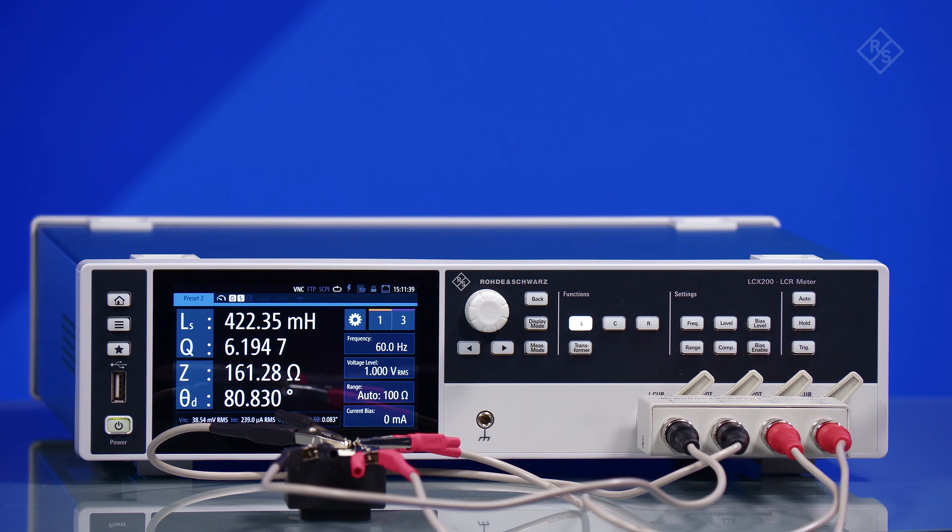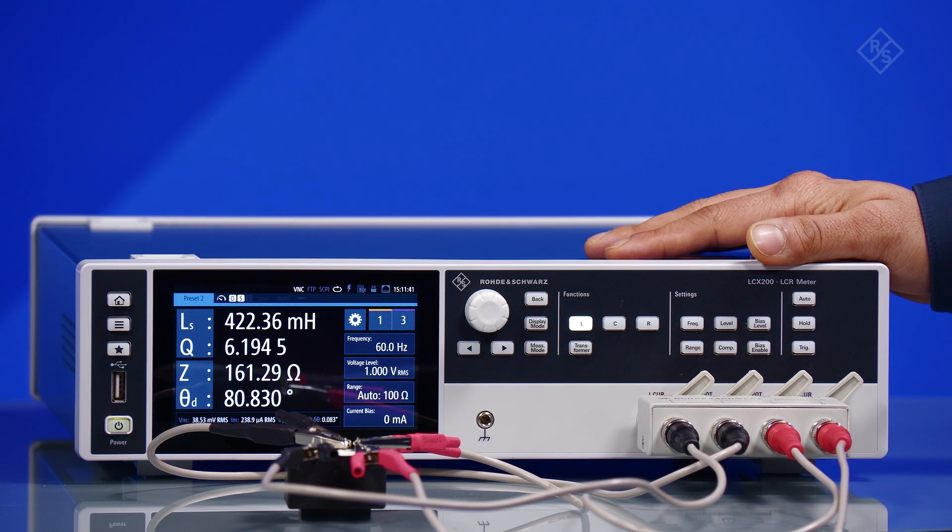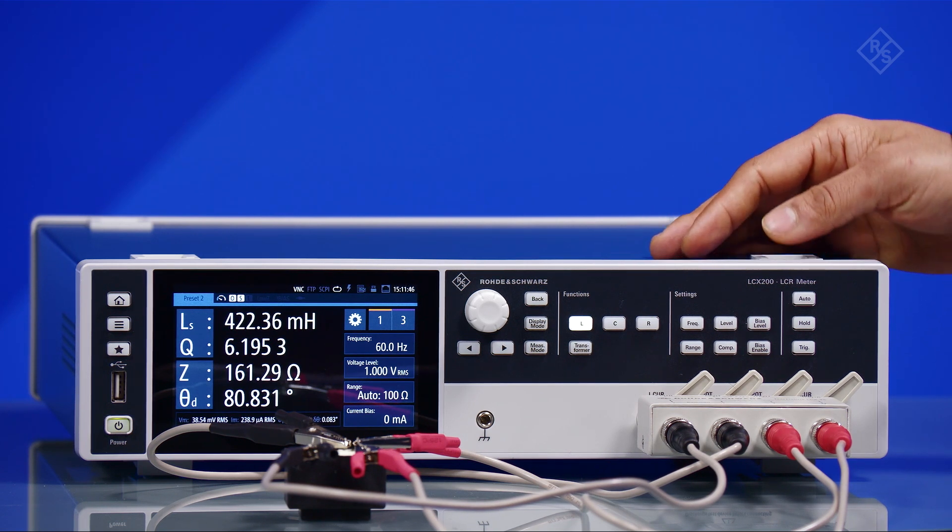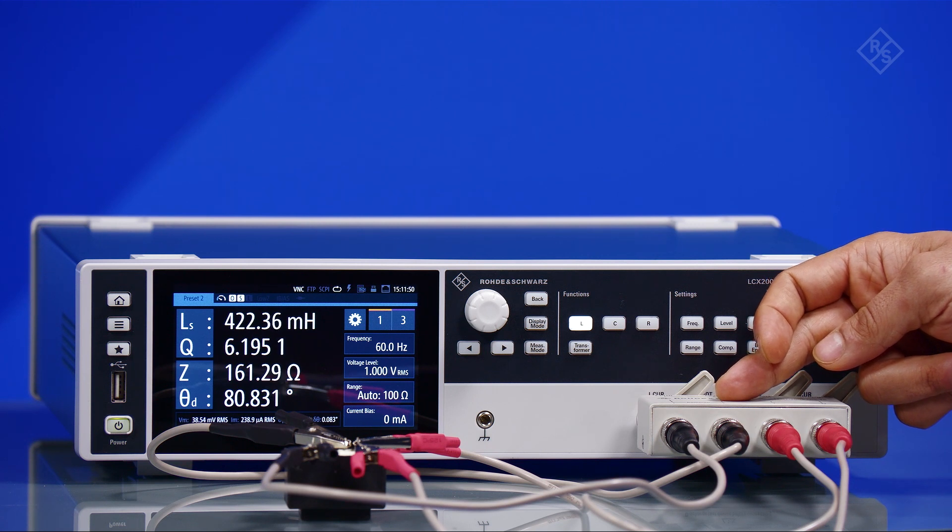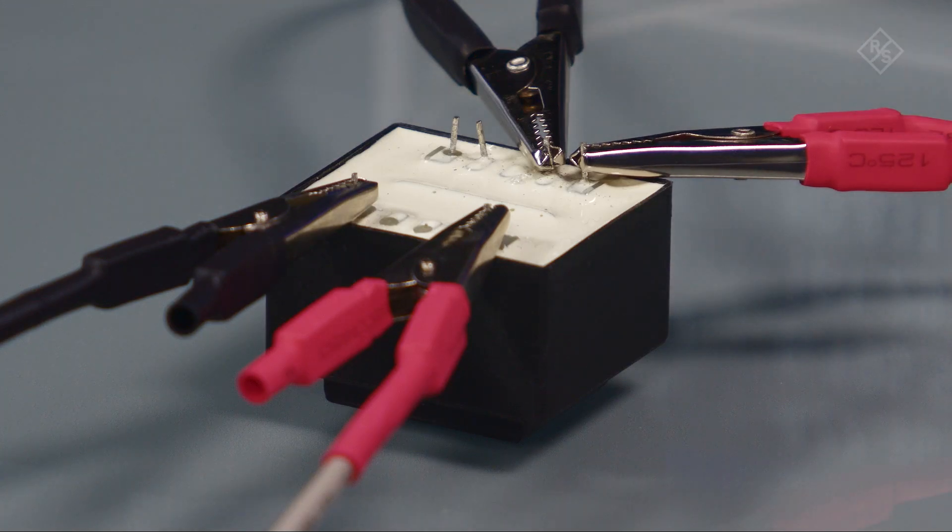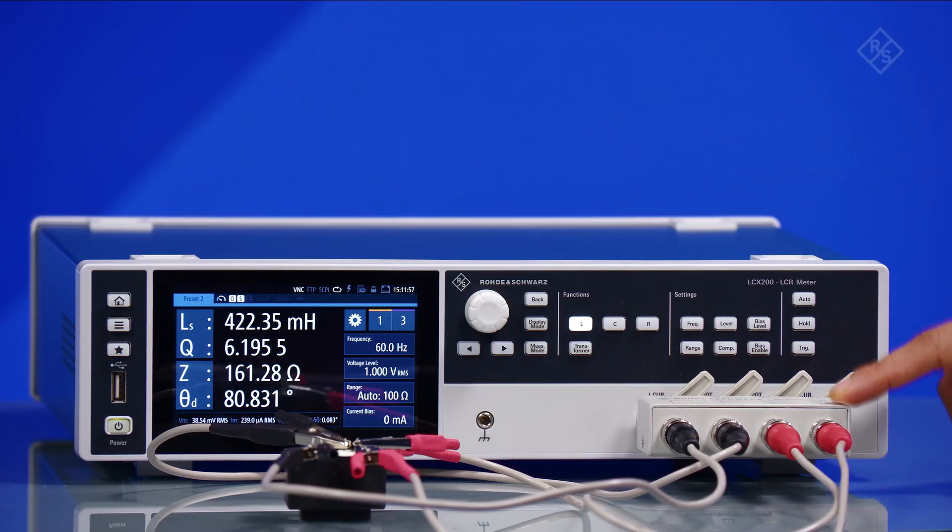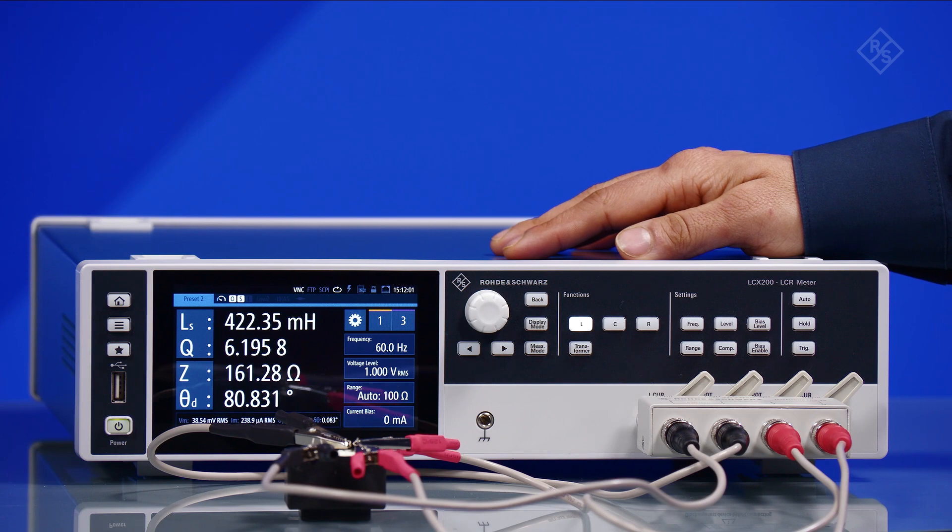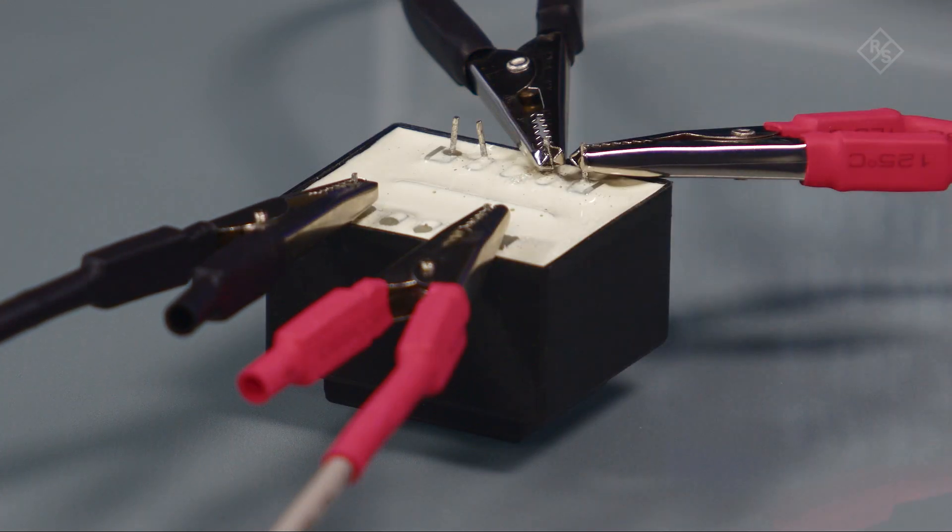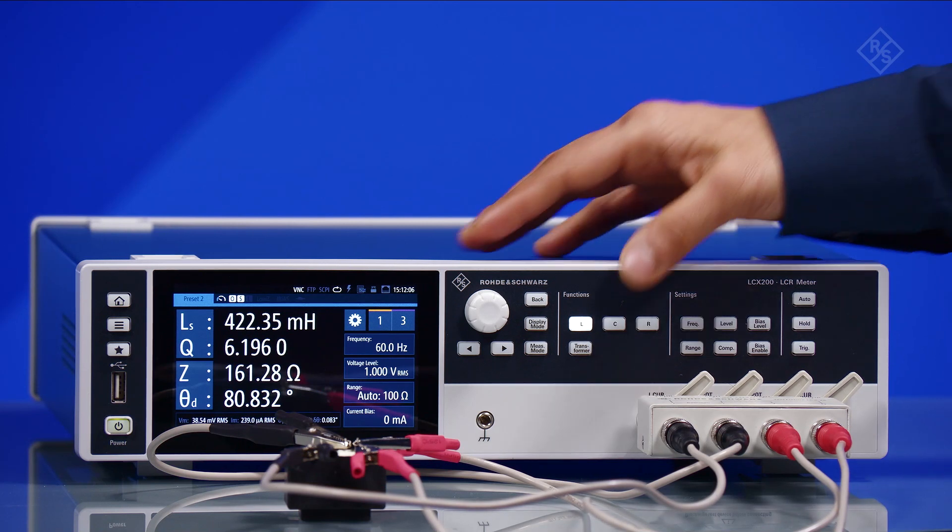Now let us learn how to measure the turns ratio and the mutual inductance of a transformer. This is a slightly different setup than shown before. In this setup, the test leads one and common of the test fixture are connected to the secondary winding of the transformer, and the test leads N and common of the test fixture are connected to the primary circuit of the transformer. Press the transformer key.